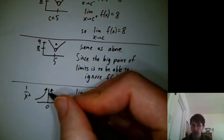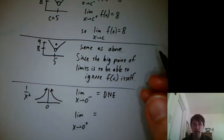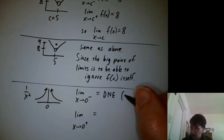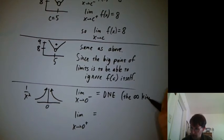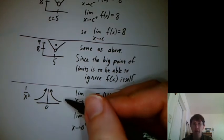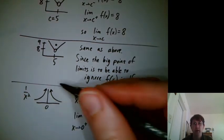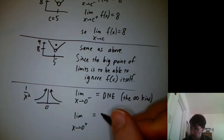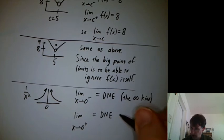So this limit is DNE. It's running beyond any finite value. And which kind of DNE? The infinity kind. How about the limit from the right? That's also the y values are running away to infinity. So we'd say DNE and again, the infinity kind.